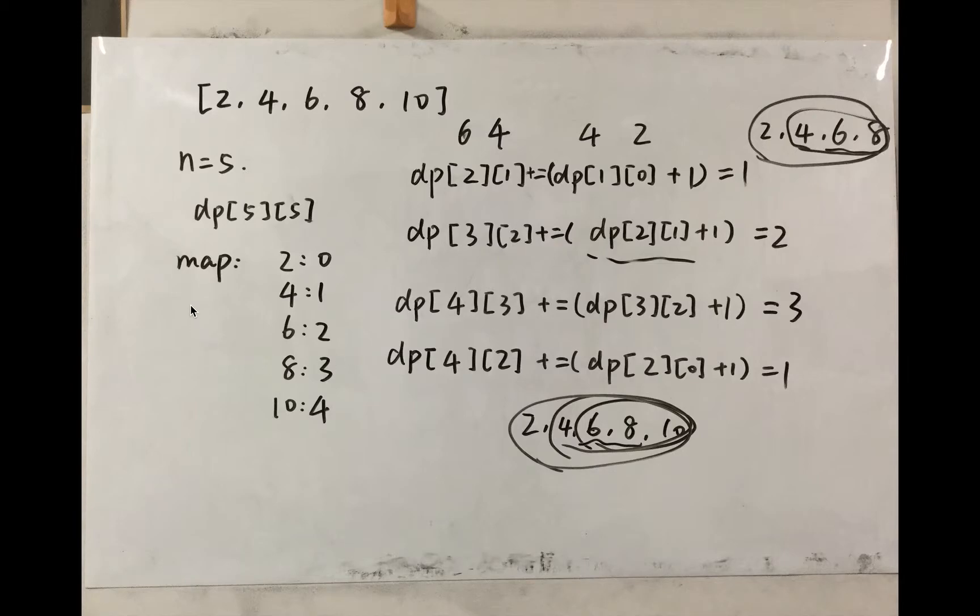So I forgot to mention this map. In this case, we may have the same number. So we need to save their index for the lookup. Like if we have the last 2 elements, we want to find the first element to consist of the arithmetic, which has three numbers. We can use a hash map to quickly look up if we already contain this number.